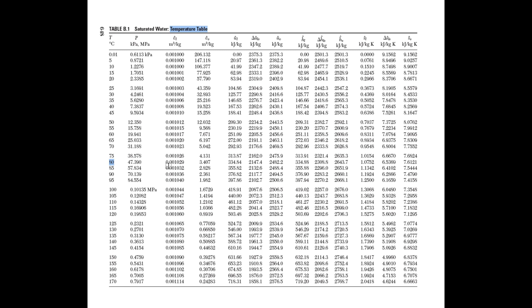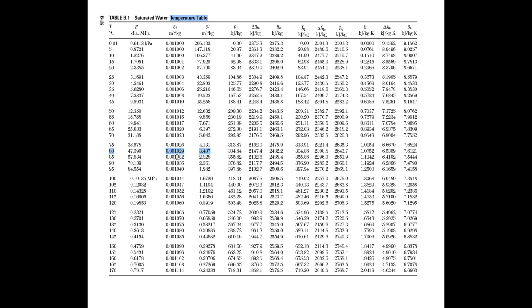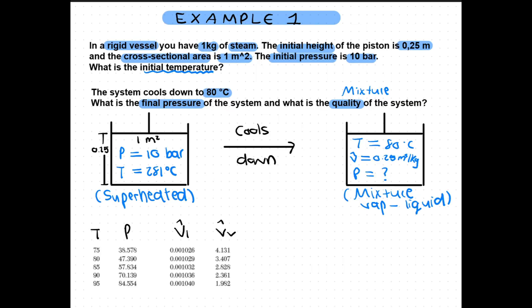Since volume is constant we know that the volume of state 2 will also be 0.25. We look at the vapor and liquid volume columns to test whether the volume of our system lies between these values. If it does not we would know that it is superheated vapor or sub-cooled liquid and we would have to go look at those tables. But since 0.25 lies between the values we know that it is a liquid vapor mixture and thus we can just read off the final pressure.